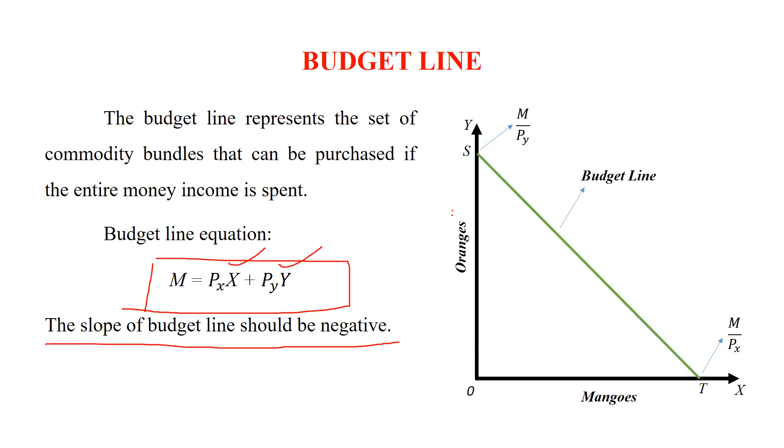You can see on the y-axis we have taken oranges and on the x-axis we have taken mangoes. Let's say total money is 100 rupees. So 100 rupees will be divided by how many units you can purchase. If the price of these oranges are 10 rupees, so 10 kg we can purchase. And mangoes are let's say 5 rupees per kg, so that would be 20 at this point. So 20 here and 10 here.